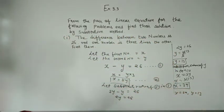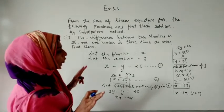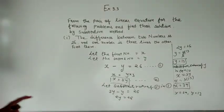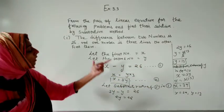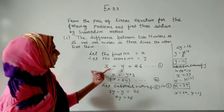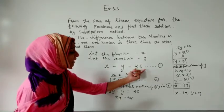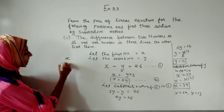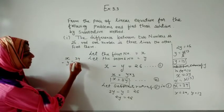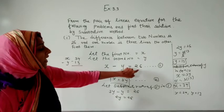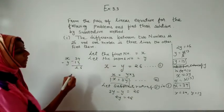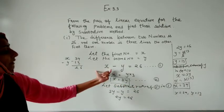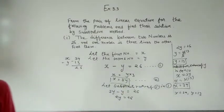Let us verify whether we are correct. The difference between the two numbers should be 26: x minus y equals 39 minus 13. Computing: 9 minus 3 is 6, and 3 minus 1 is 2, giving 26. This confirms our values are correct and our equations are also correct. This is the end of this question.